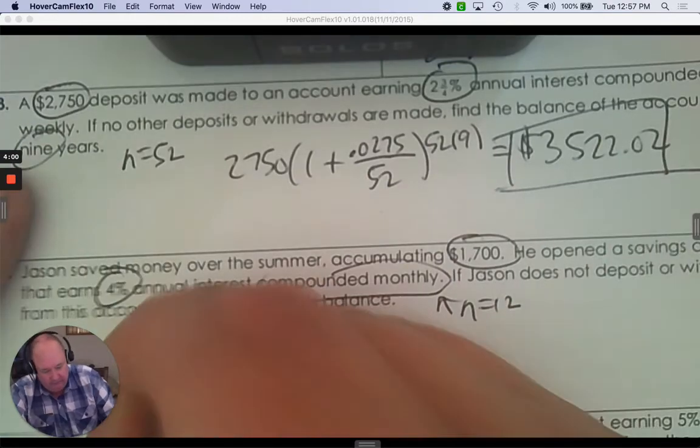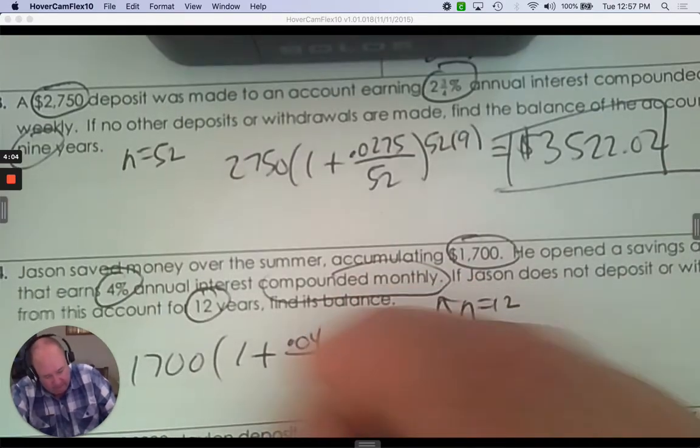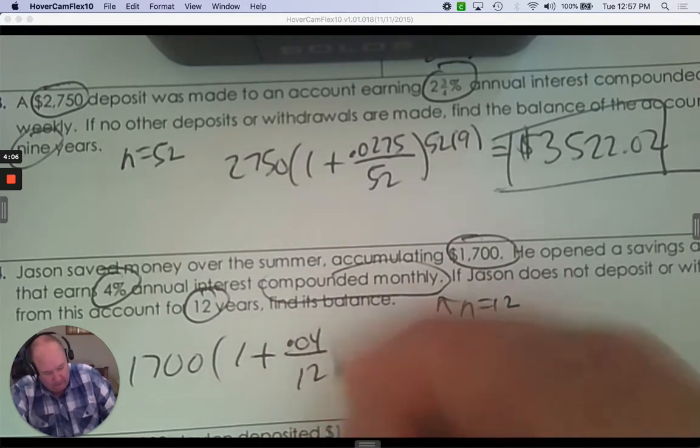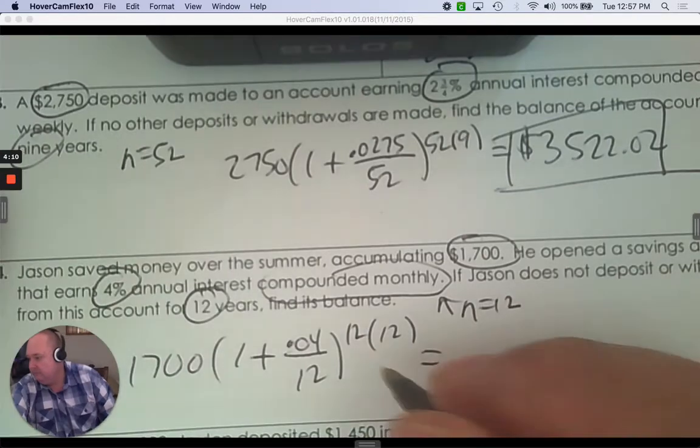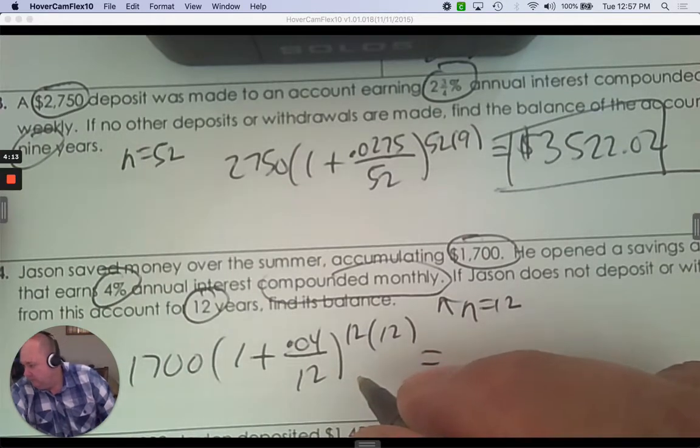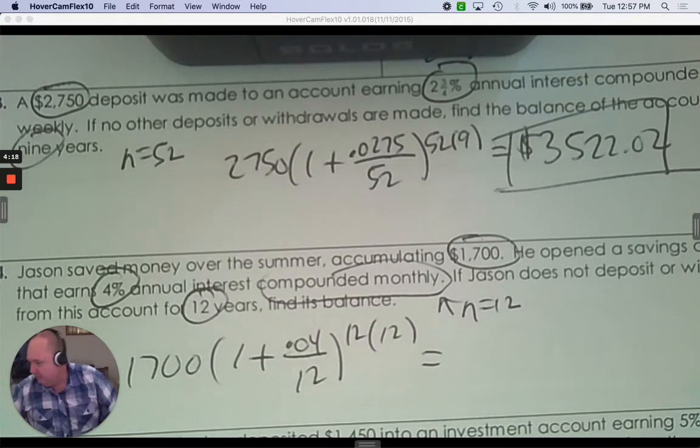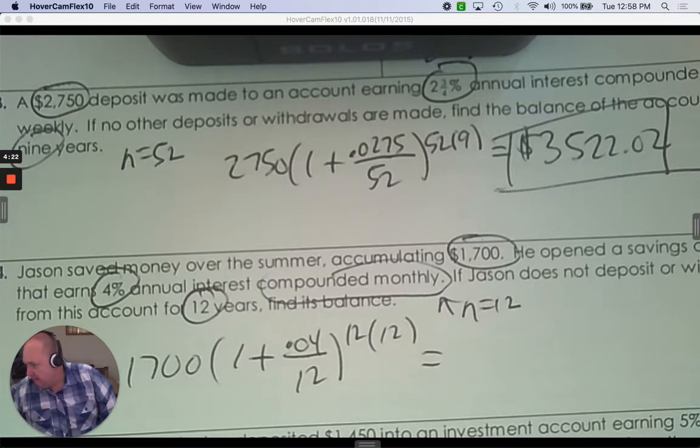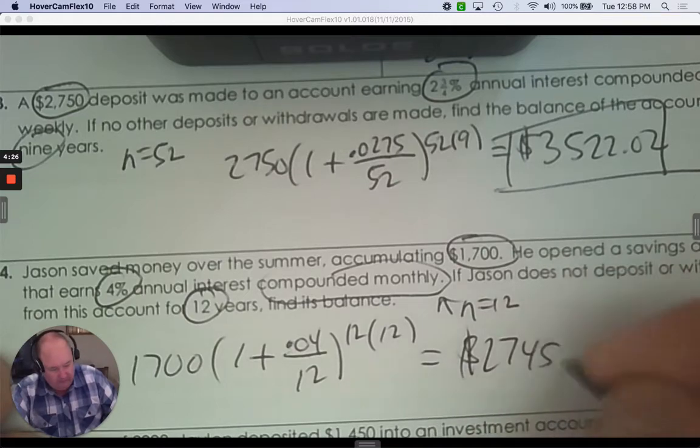So $1,700. One plus 4% as a decimal. Compounded 12 times a year for 12 years. And you get $2,745.13.